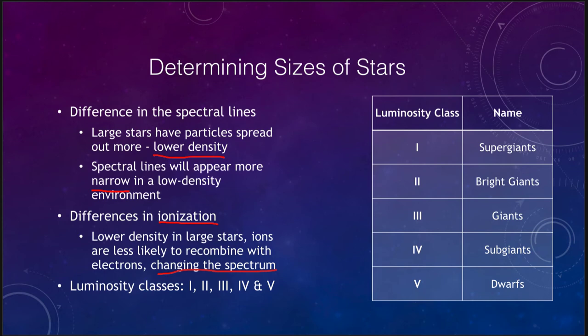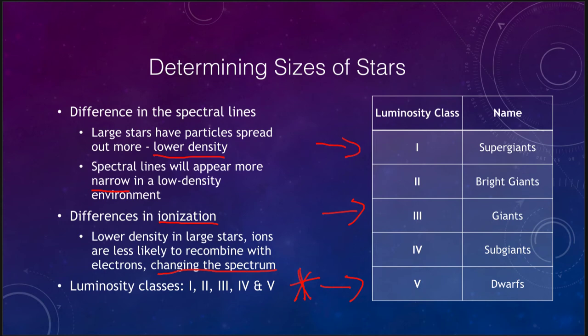Based on this, astronomers have made five luminosity classes to go with the spectral classes. The primary three are supergiant stars (class I), giant stars (class III), and dwarf stars (class V). Most of the stars we will see are dwarf stars — our own sun would be classified as a dwarf. Just because something is classified as a dwarf does not mean it is small; it simply refers to the luminosity class based on the spectrum.